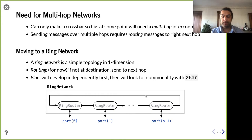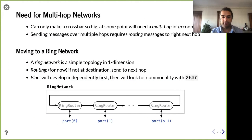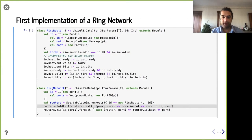This first line makes the ring connections. Then we connect each router to the ports using zip — zipping the routers with io.ports. They should be the same length since both are declared with num hosts. For every router and port pair, we go ahead and connect them.